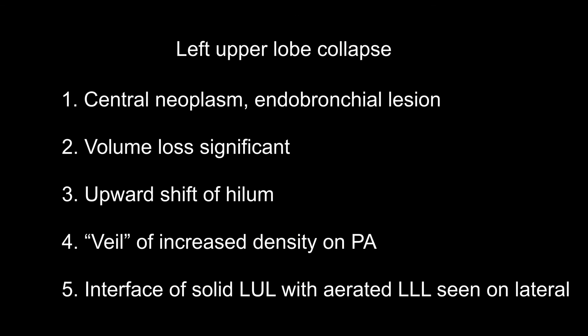In summary, a left upper lobe collapse is almost always due to a neoplasm, either an extrinsic or endobronchial neoplasm. In an ITU setting it could be due to a mucus plug, and in children and asthmatics you need to think about mucus plug. In patients over 45 who smoke, an endobronchial lesion is the most likely cause of any lobar collapse. Because the left upper lobe is large, it causes significant volume loss. You get upward shift of the hilum, and on the PA film this collapsed left upper lobe is represented as a veil coming down from the apex towards the hilum. You do see the interface of the solid collapsed left upper lobe with the aerated, hyperexpanded left lower lobe when seen on the lateral view.